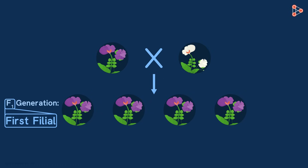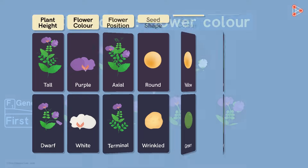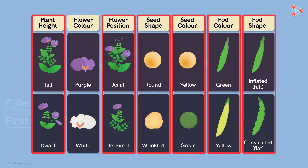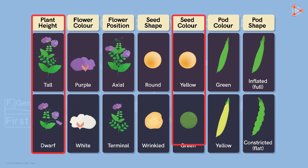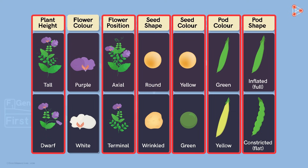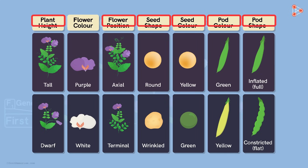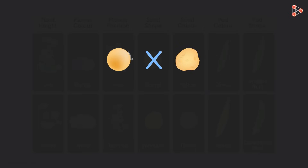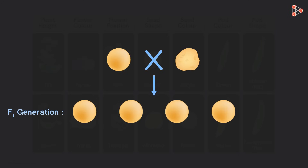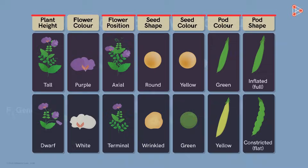Mendel considered colour of the flower as a character. He also considered all the other characters like plant height, seed colour, and so on. He found that only one character is expressed in the F1 generation. For instance, he crossed a pea plant having round seeds with the one having wrinkled seeds. In the F1 generation, he obtained all the plants having only round seeds. It implied that the offsprings are similar to only one of the parents and do not have any resemblance with the other, and this was seen for all the characters.